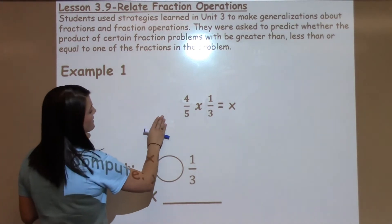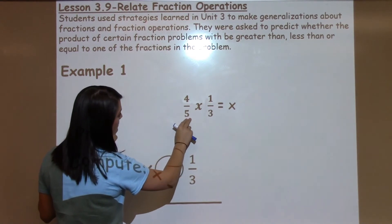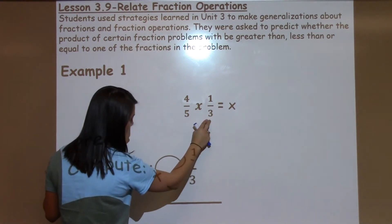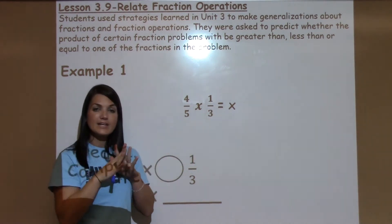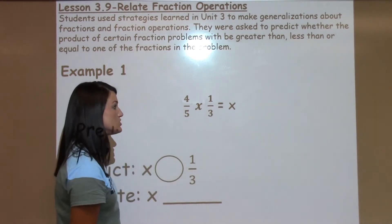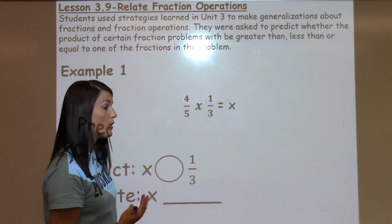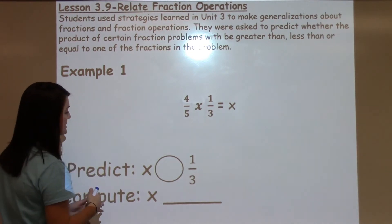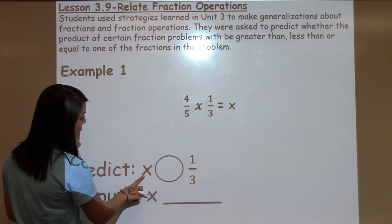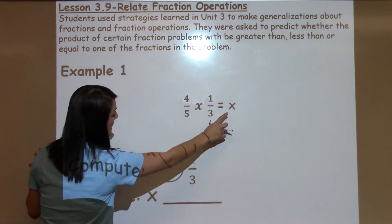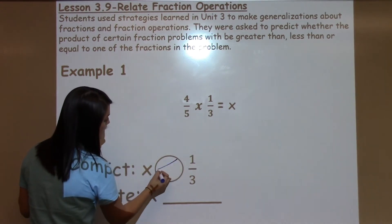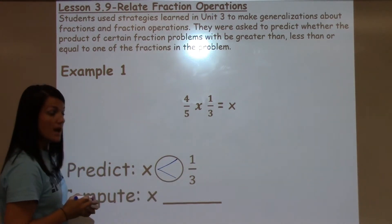So, when I'm thinking about the generalizations we talked about, I know that this is just a regular fraction times another regular fraction. When I multiply just two fractions, my answer is usually going to be smaller than one of those fractions. So, because I know that generalization, I can predict that my answer, x, is going to be smaller than my fraction 1 third.